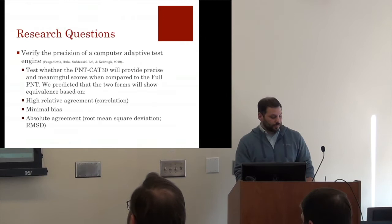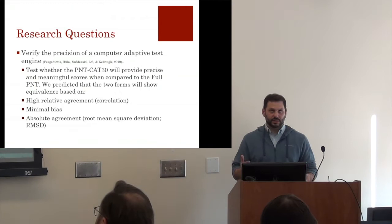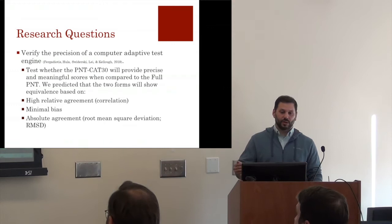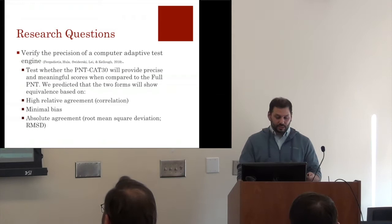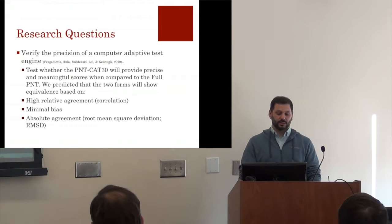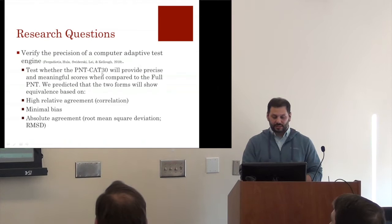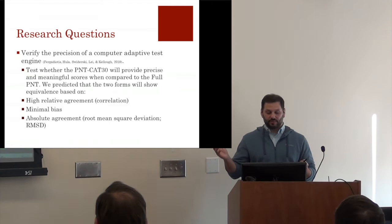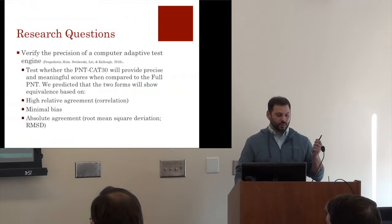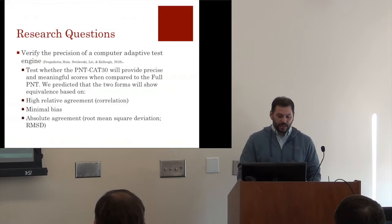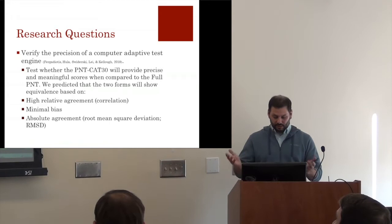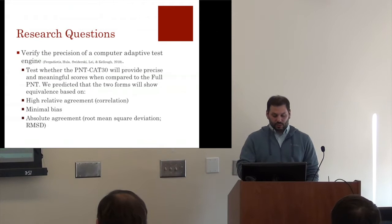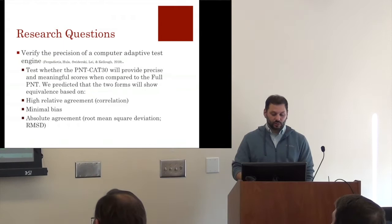We had done simulations in 2015 and concluded this was feasible. Then, funded by NIDCD, we collected empirical data to verify the precision of the CAT engine — specifically, whether a 30-item CAT version of the Philadelphia Naming Test (which typically has 175 items) could produce scores in agreement with the full version. We examined relative agreement, checked for bias associated with the CAT, and looked at absolute agreement across the two versions.